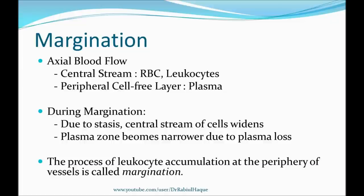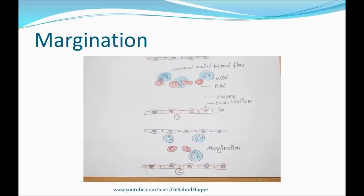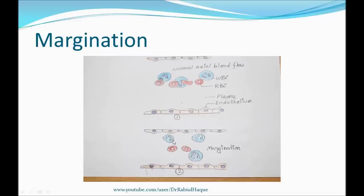Here is an image showing margination. The top image shows a normal blood vessel with axial blood flow — red blood cells in the center, surrounded by leukocytes, with a cell-free peripheral plasma layer. In the bottom image, due to inflammation, the axial blood flow has been disrupted, and leukocytes are now accumulating at a more peripheral position in the blood vessel. This is margination.